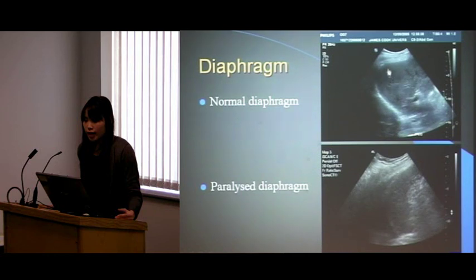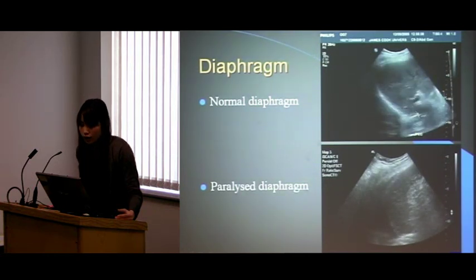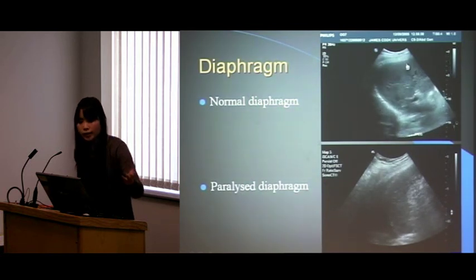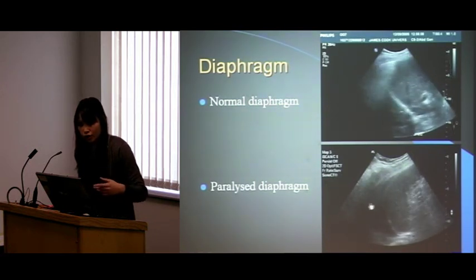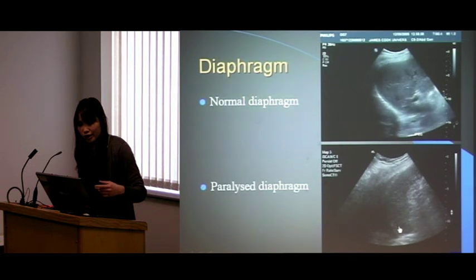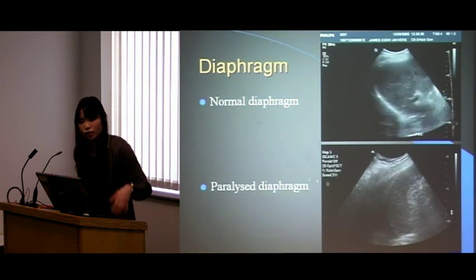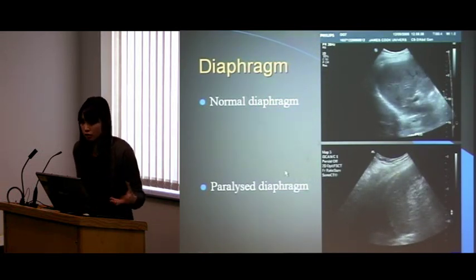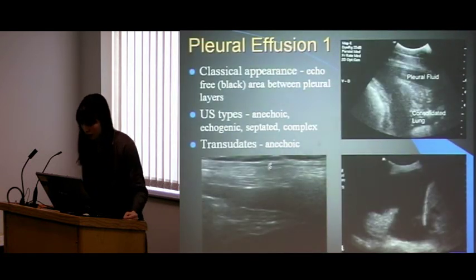Moving on to the diaphragm: there's a nice video of the diaphragm moving up and down normally. On the lower picture is a paralyzed diaphragm — the patient is trying to breathe but it's not really moving. Then you can start thinking: is the paralysis central or peripheral?